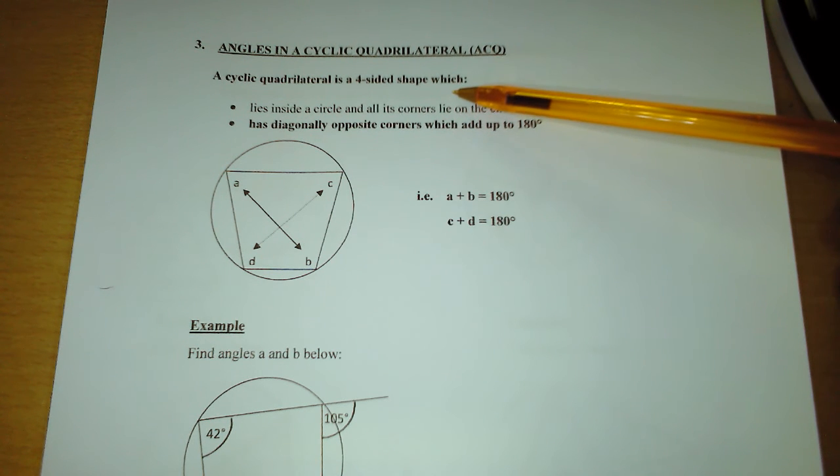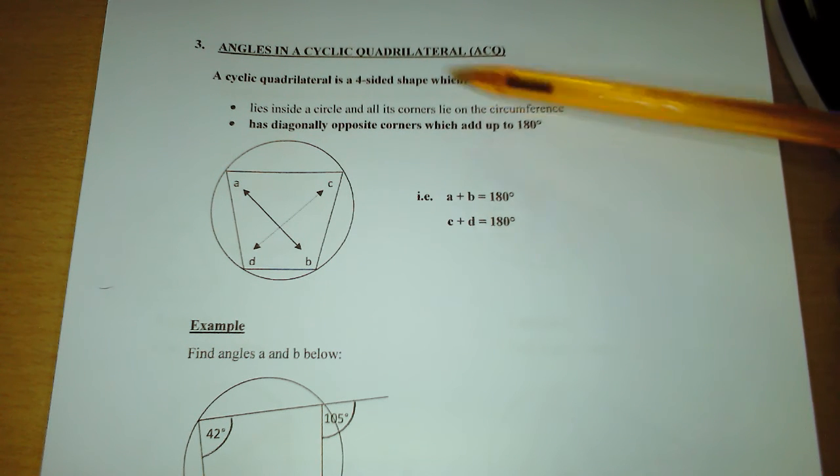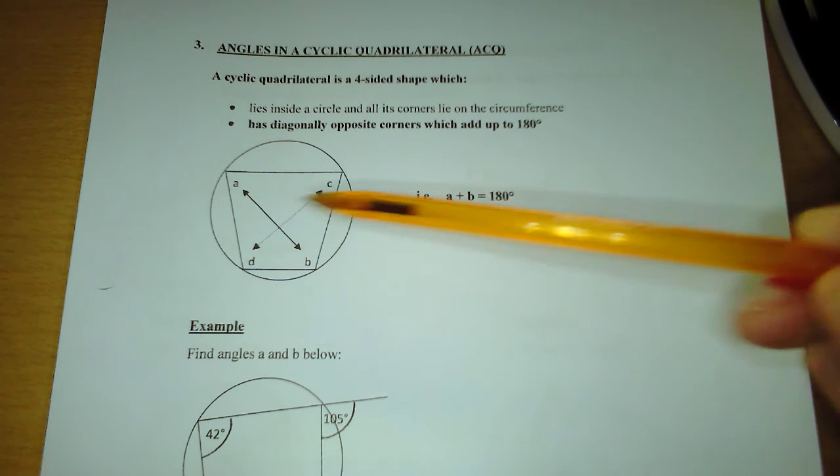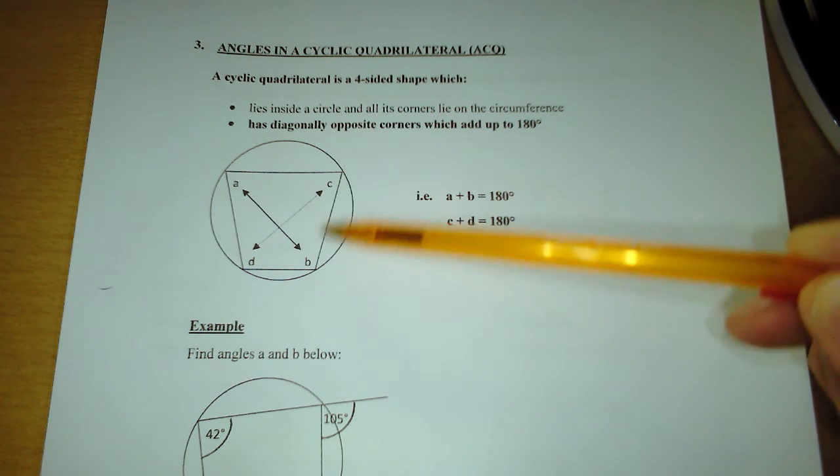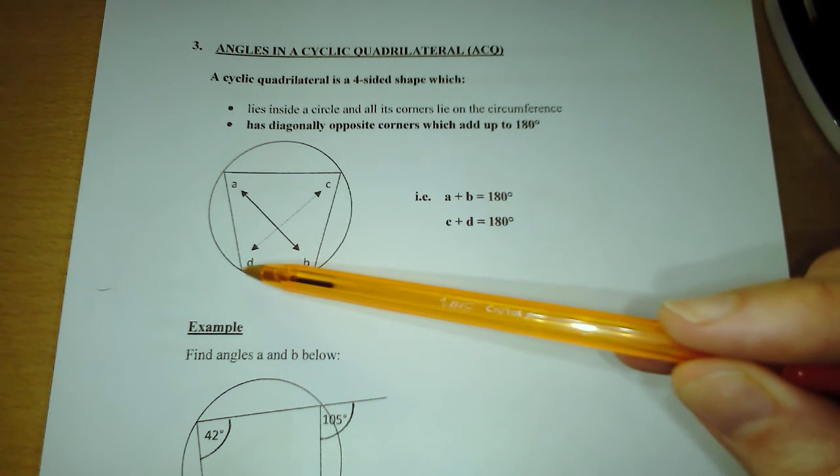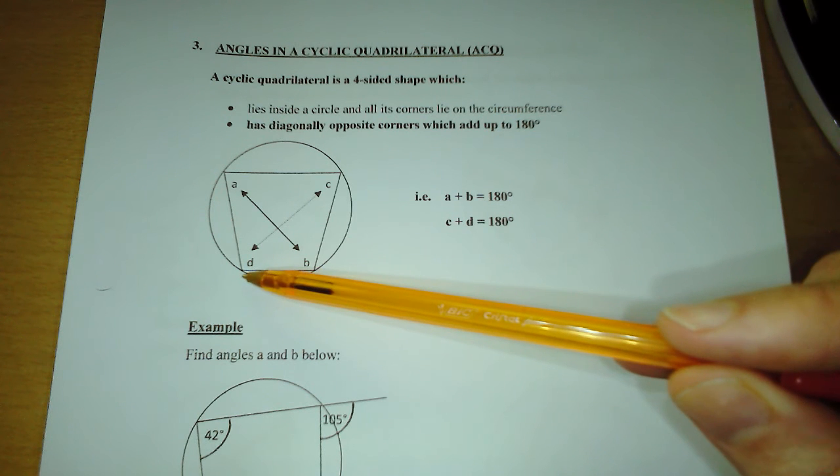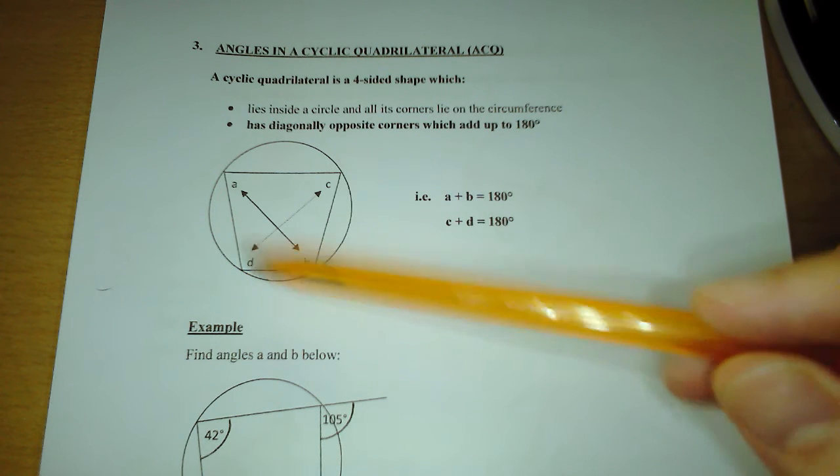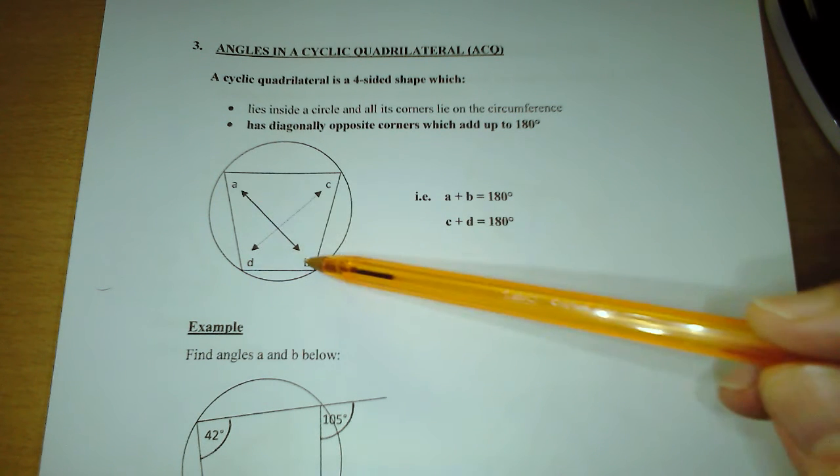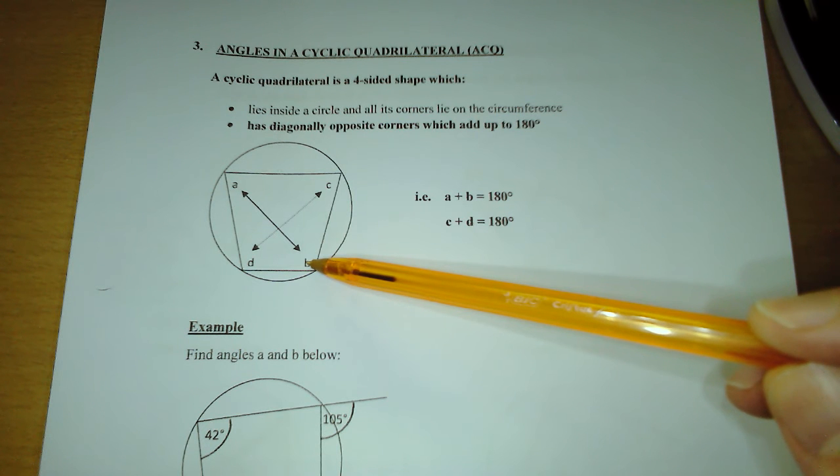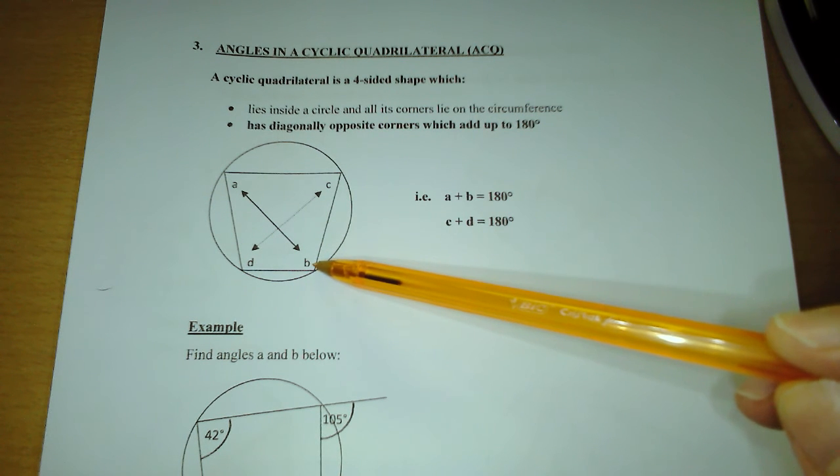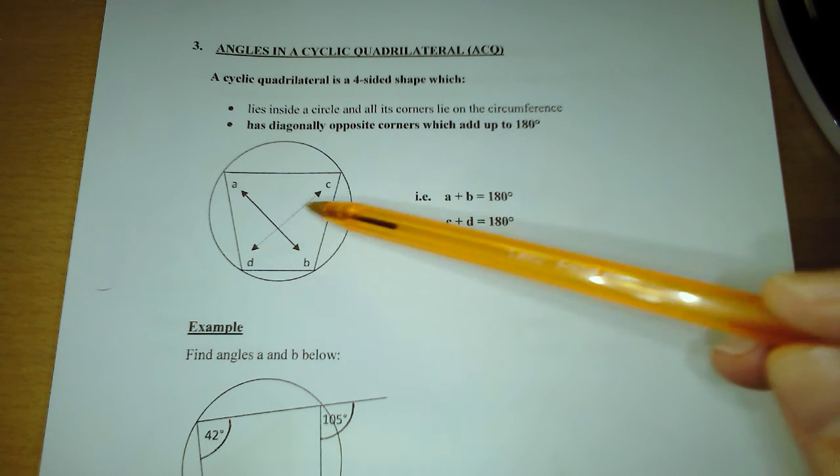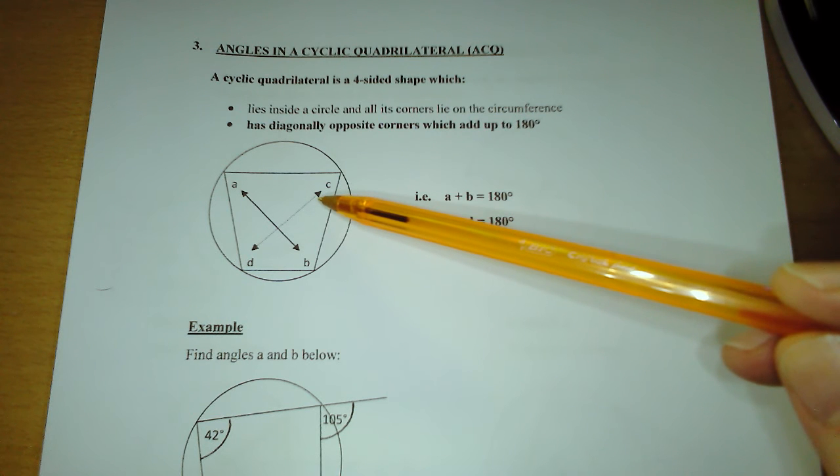A cyclic quadrilateral is a four-sided shape which lies inside a circle such that all of the corners of the quadrilateral lie on the circumference of the circle. The property is that the diagonally opposite angles in the cyclic quadrilateral add up to 180 degrees. So A plus B will add up to 180, but also C plus D will add up to 180.